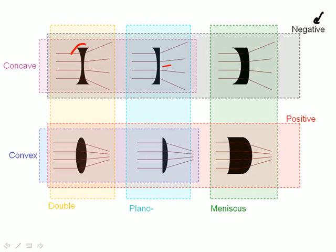This guy over here is the overlap of negative, concave, and double. So I would call this a negative, double-concave lens.